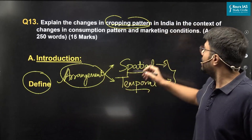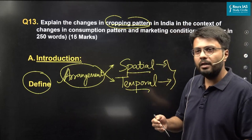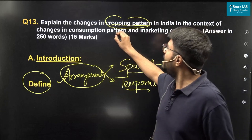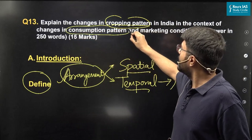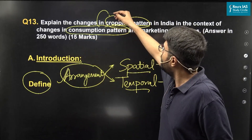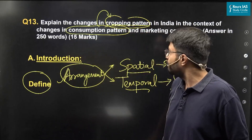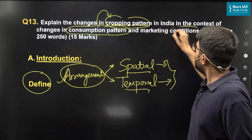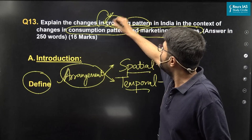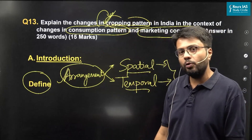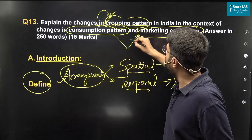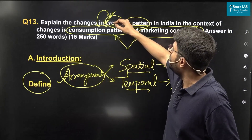This question in particular asks us to define only two definite patterns. We need to understand and highlight what the consumption pattern in the country is and how it influences the cropping pattern. Further, marketing conditions also play a key role in deciding what kind of cropping pattern the country follows. Hence, in the body of this answer, we will only focus on these two aspects that define cropping pattern.